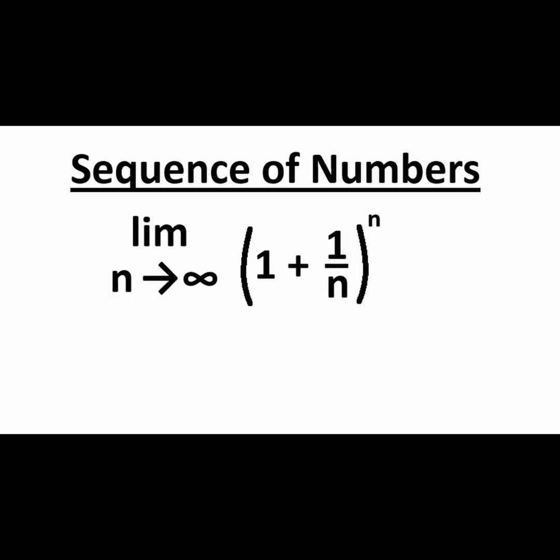Furthermore, take the sequence defined by this odd-looking function 1 plus 1 divided by n to the power of n. It turns out that this sequence has a limit. As n approaches infinity, the terms in the sequence approach Euler's number e.